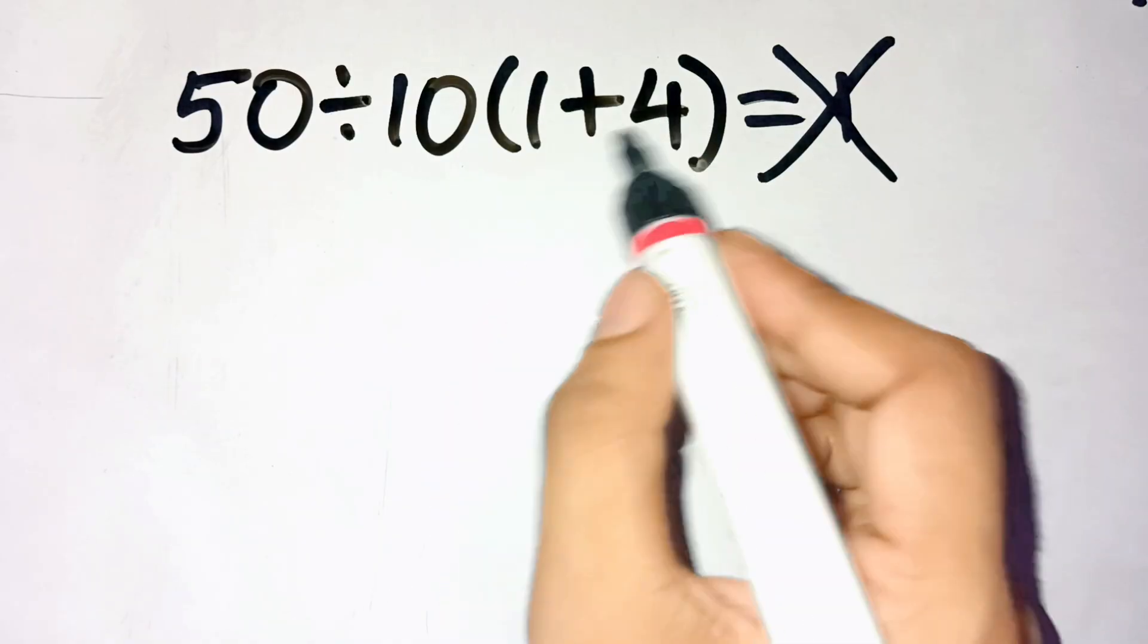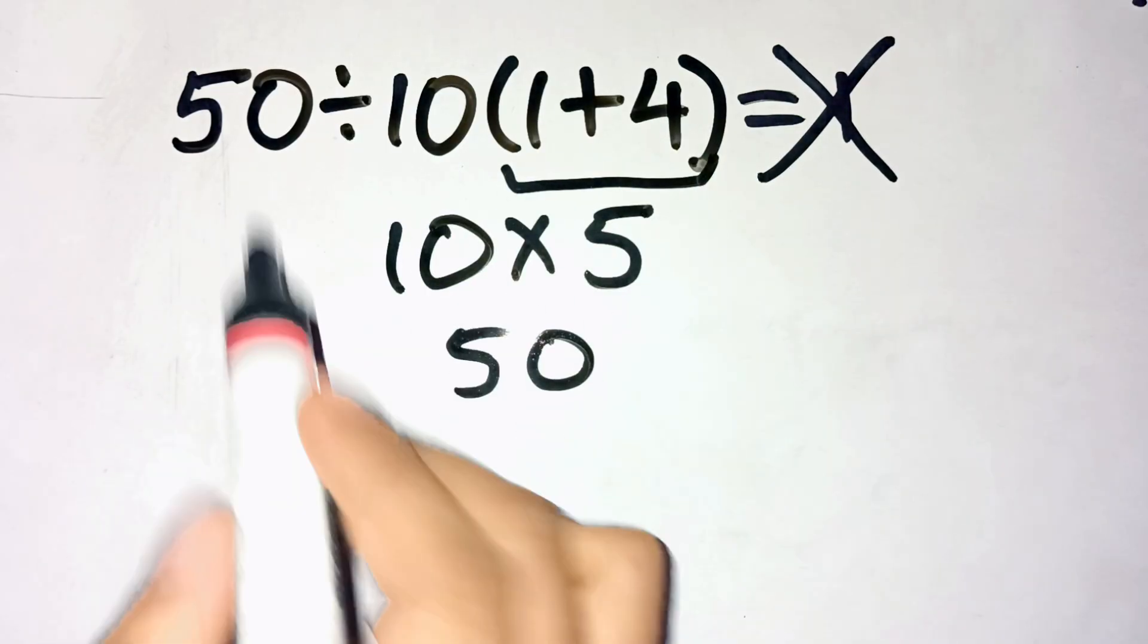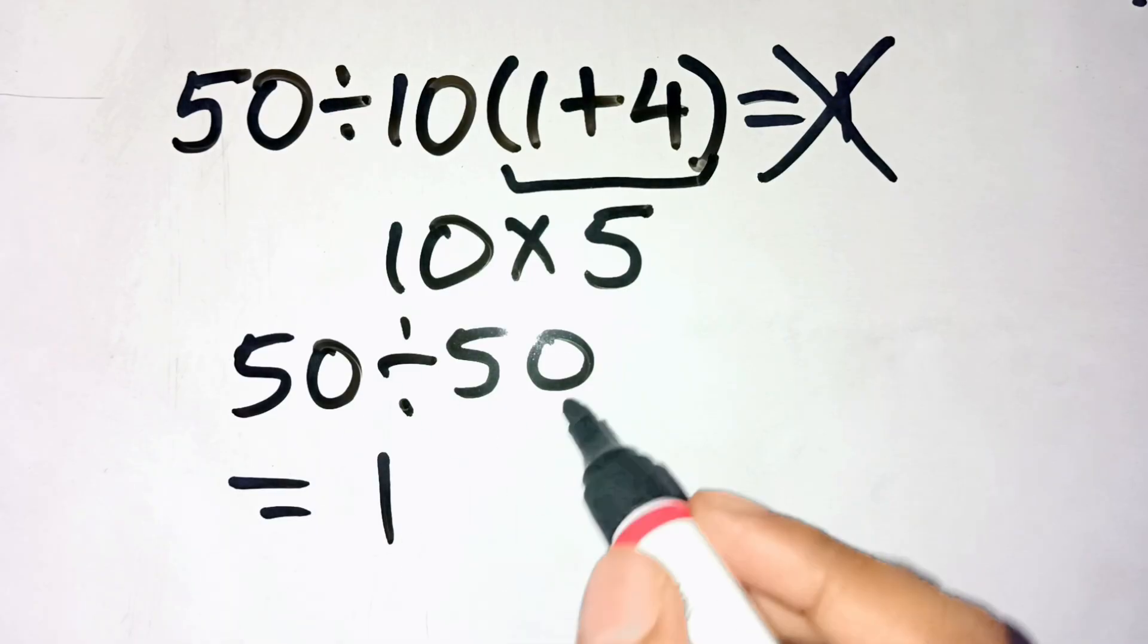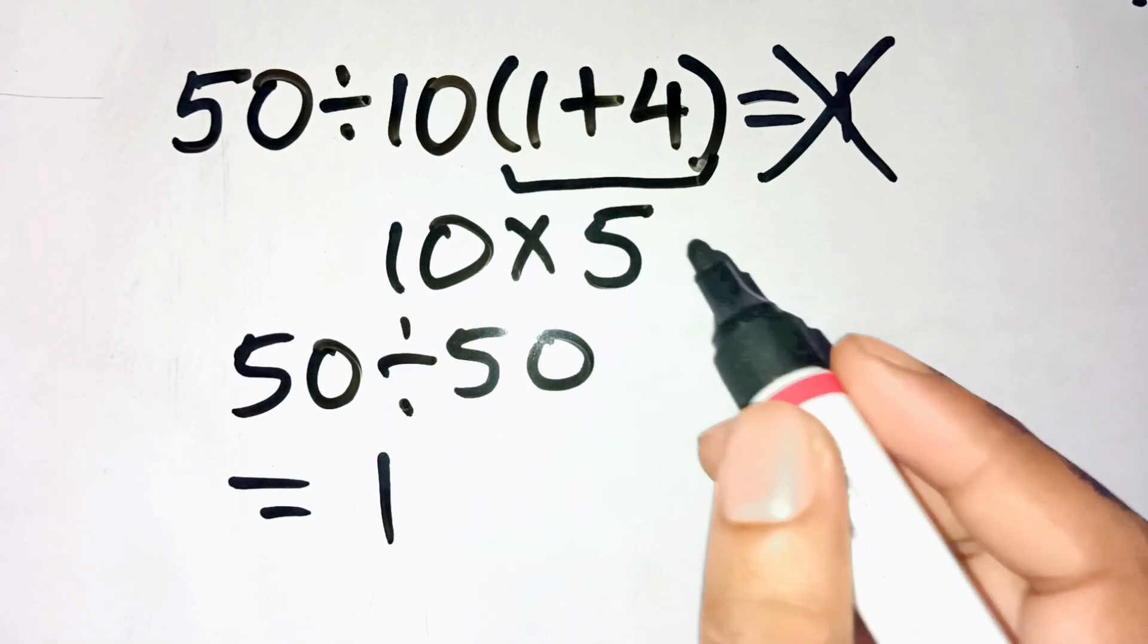Inside the parentheses, 1 plus 4 gives 5, then 10 times 5 is 50, and 50 divided by 50 is 1. Easy, right? But that's exactly where almost everyone on the internet goes wrong.